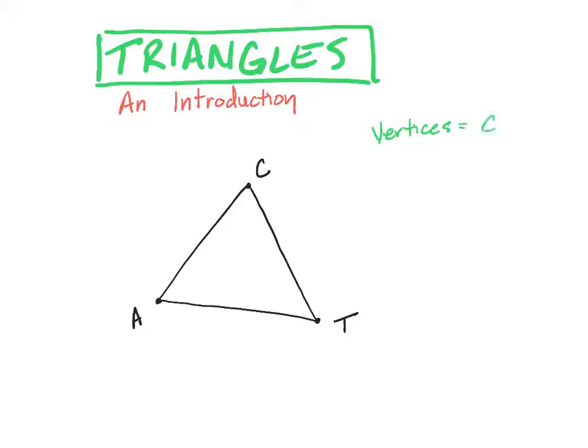So the vertices are C, A, and T - so CAT. Okay, the sides we can call CA or AC, you can call it CT or TC.